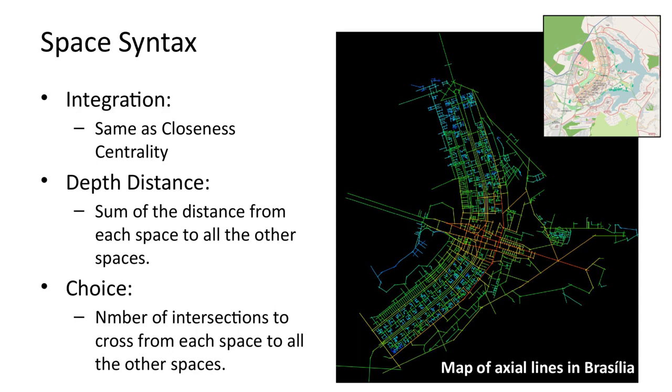Choice measures for each space the number of times shortest paths between other spaces travel through that space. It is similar to betweenness centrality.